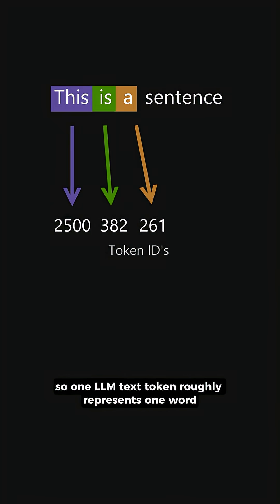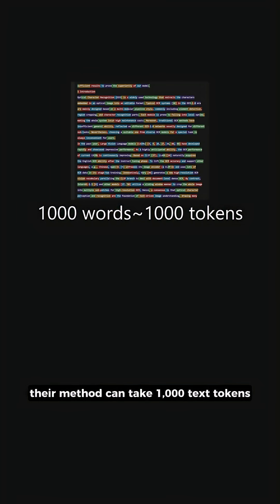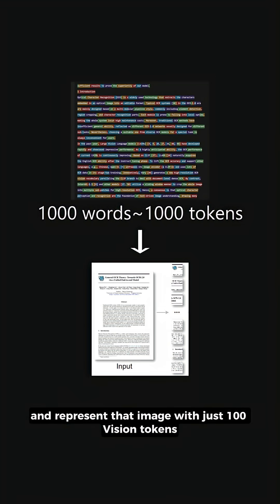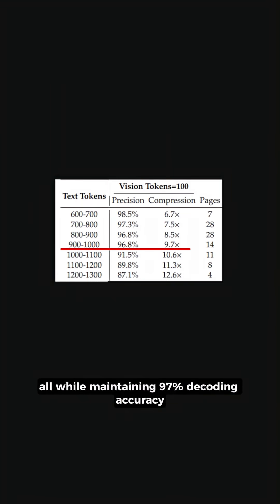One LLM text token roughly represents one word. Their method can take 1000 text tokens, render them as an image, and represent that image with just 100 vision tokens, all while maintaining 97% decoding accuracy.